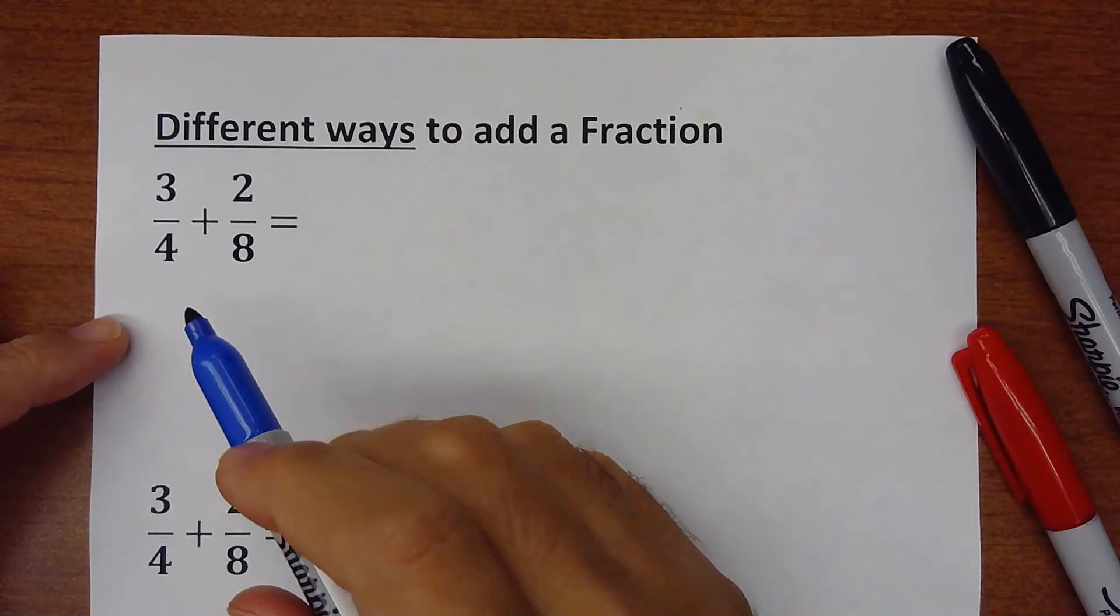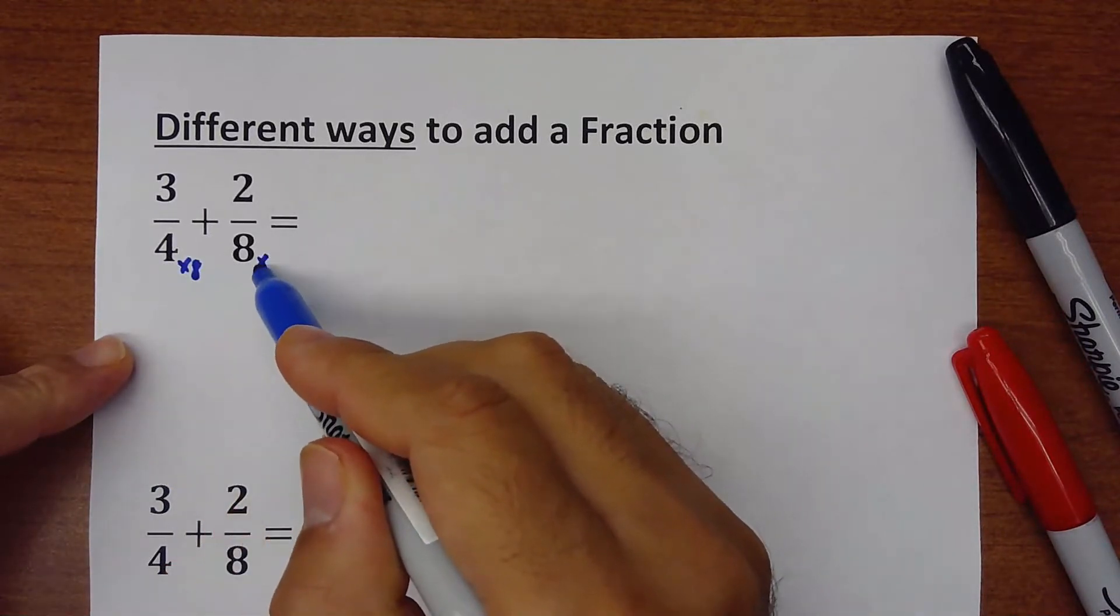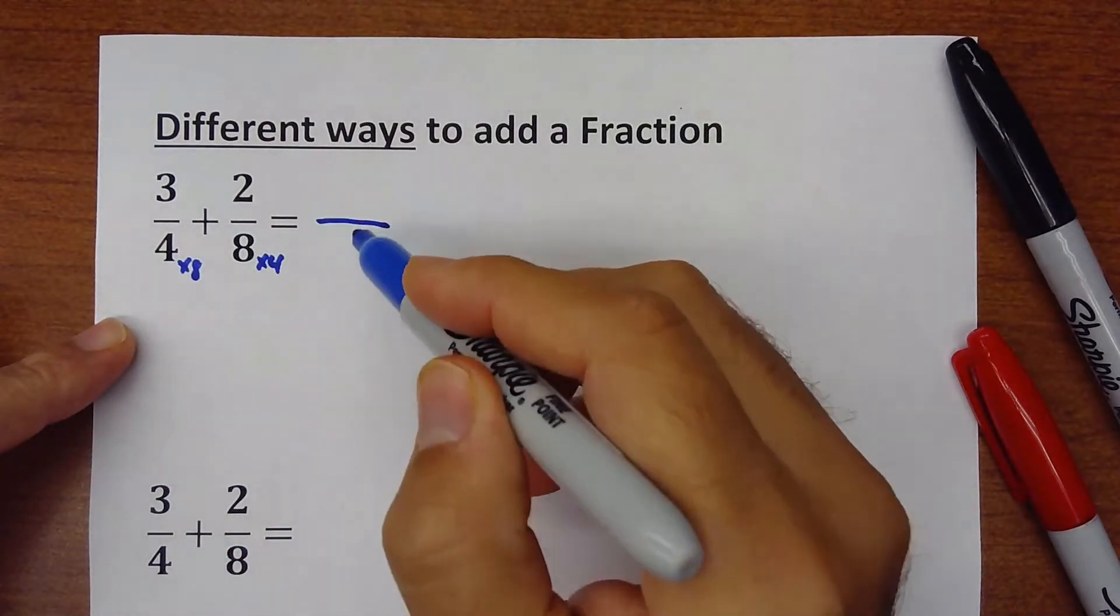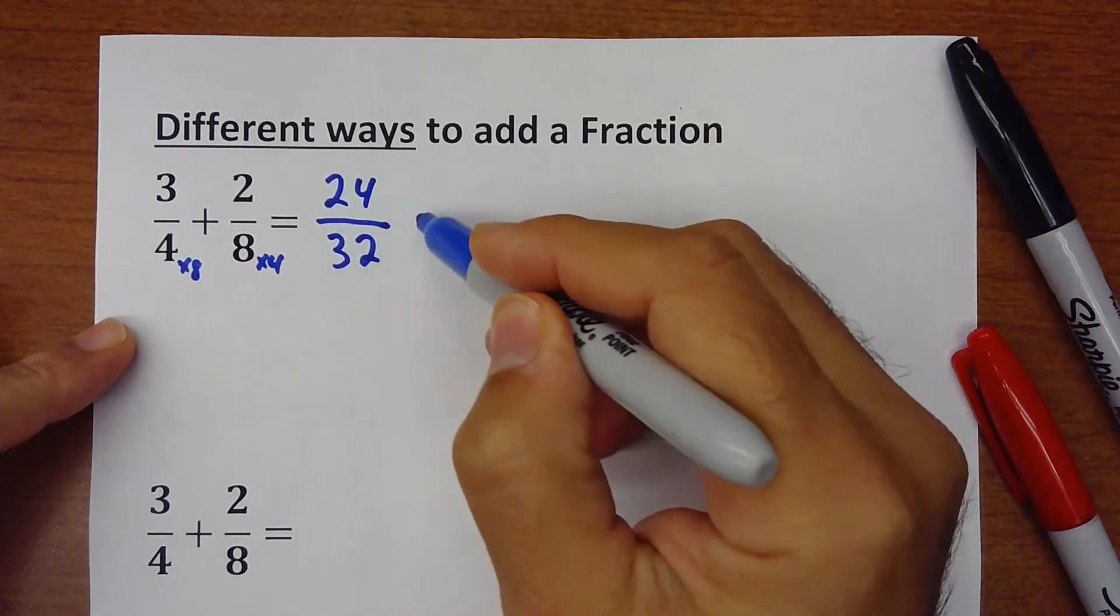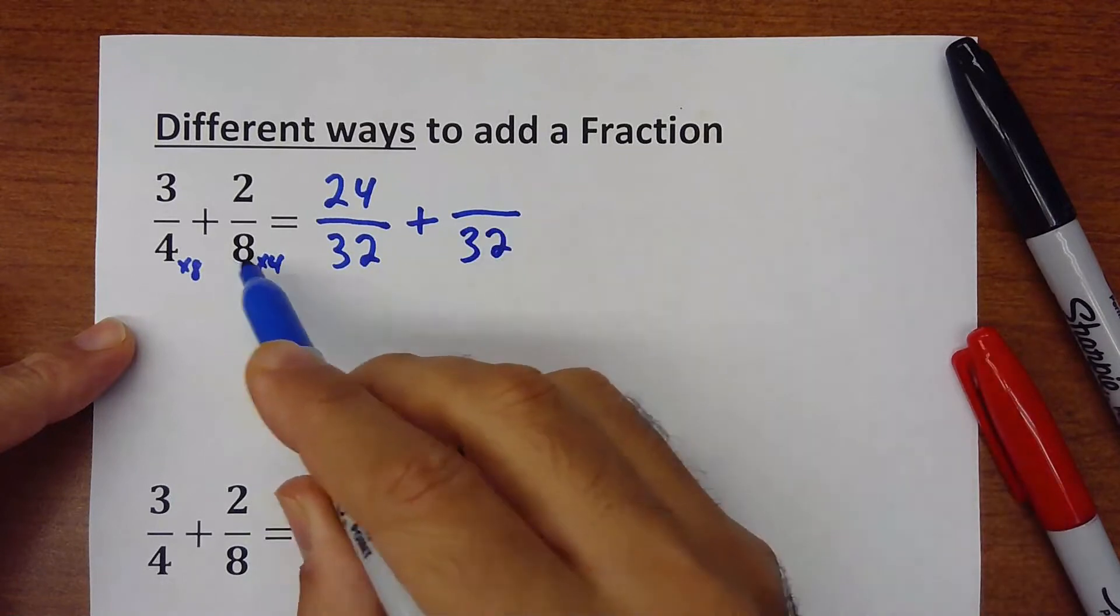One of the ways is I just multiply 4 times 8 and 8 times 4. That's the very famous cross multiplication. So basically that would be 32 here, 24, plus it would be 32 on the bottom because 8 times 4 is 32.